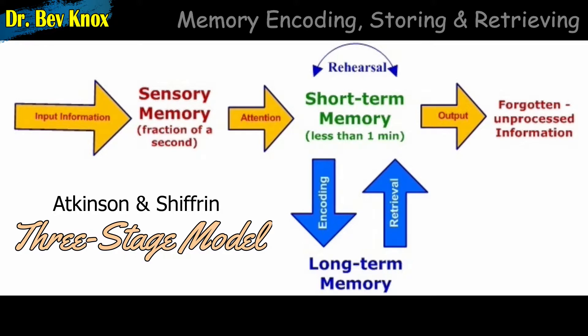Sensory memory refers to the initial momentary storage of information that lasts only an instant. Here, an exact replica of the stimulus recorded by a person's sensory system is stored very briefly. In a second stage, short-term memory holds information for 15 to 25 seconds and stores it according to its meaning. The third type of storage system is long-term memory, where information is stored on a relatively permanent basis, although it may be difficult to retrieve.